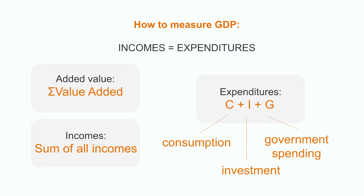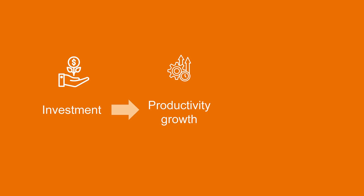All this activity is recorded in the system of national accounts. Income and expenditure approaches are the ways to measure the current state of the economy. But how do we foster economic growth in the long run? We can do so by investing more. Investment means expenditures on capital — for example, buying new equipment, building more production capacity, or investing in automation. All these expenditures increase productivity, so for a given level of inputs, our economy now produces more outputs over a given period of time.